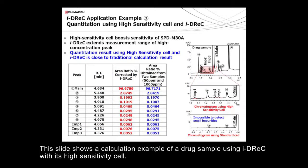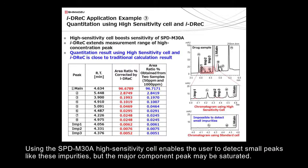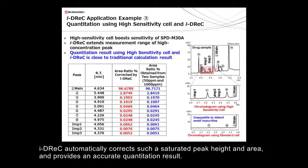This slide shows a calculation example of a drug sample using iDREC with its high-sensitivity cell. Using the SPD-M30A high-sensitivity cell enables the user to detect small peaks like impurities, but the major component peak may be saturated. iDREC automatically corrects such a saturated peak height and area and provides an accurate quantitation result.